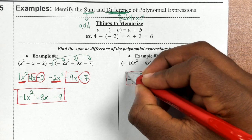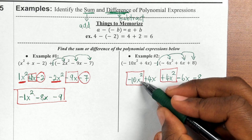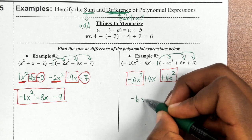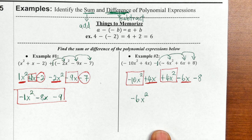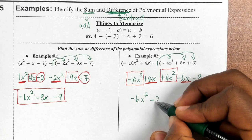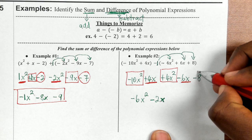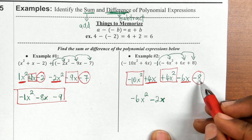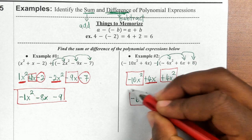Now we combine like terms. Negative 10x squared plus 4x squared: negative 10 plus 4 gives negative 6x squared. Then combining the x terms: 4x minus 6x gives negative 2x. The constant negative 8 has no like term, so we bring it down. The final result is negative 6x squared minus 2x minus 8.